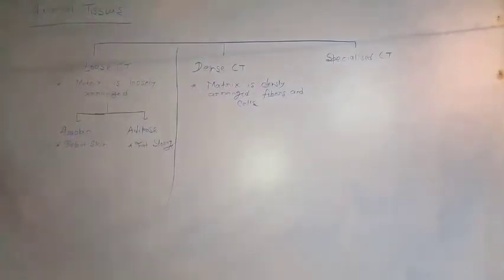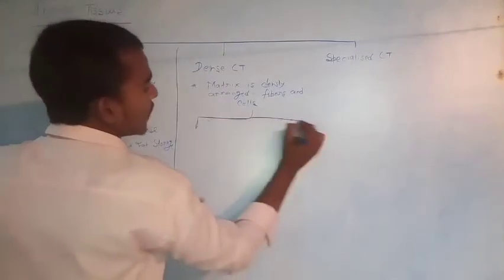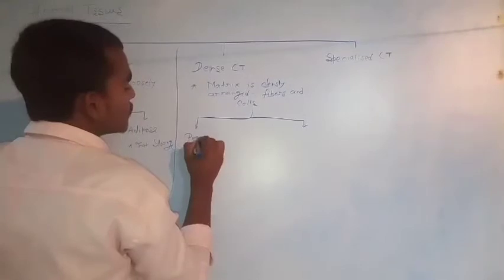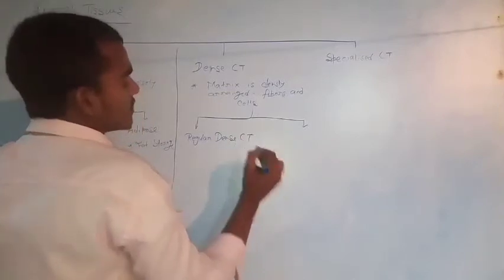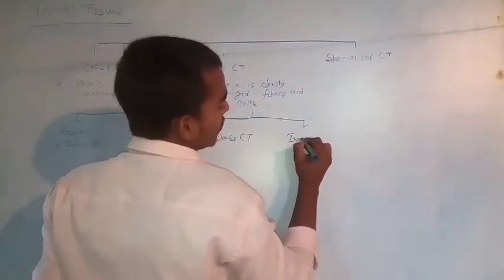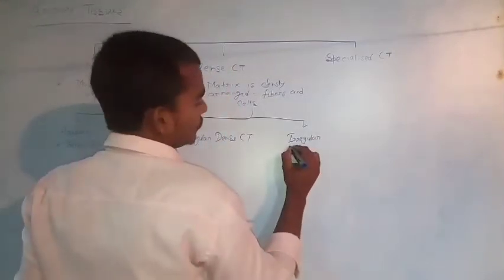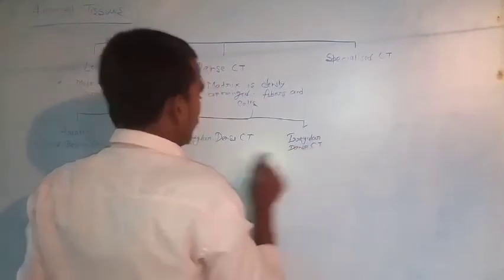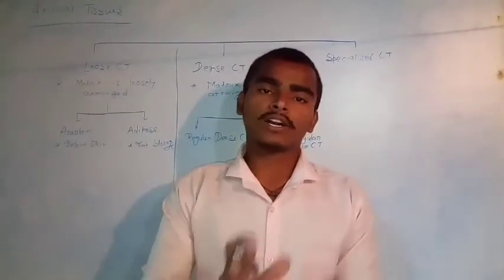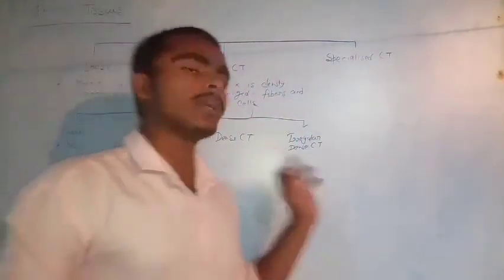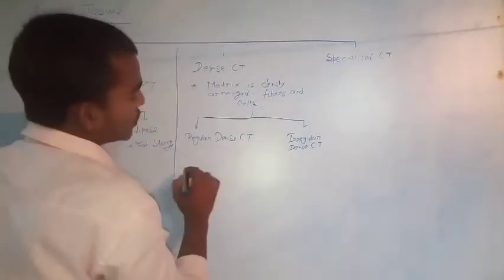Dense connective tissue is also divided into two basic categories: regular dense connective tissue and irregular dense connective tissue. Regular means the fibers and cells present in the matrix region are regularly arranged, while in irregular dense connective tissue, these fibers and cells are irregularly arranged.